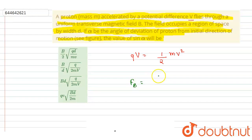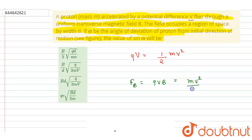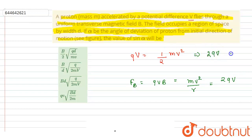Since the velocity and the magnetic field are perpendicular to each other, the magnetic force is qvB, and this acts as the centripetal force: qvB = mv²/r. You can substitute mv² = 2qV from the kinetic energy equation.